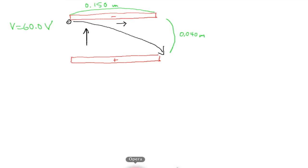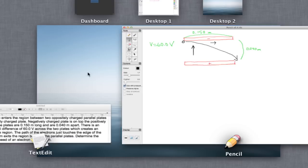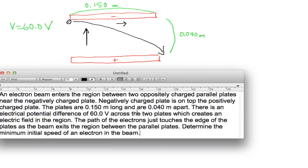So getting back to the question. The plates experience a potential difference of 60.0 volts, and we're asked to determine the minimum initial speed of the electron in the beam. So let's try to solve this problem.